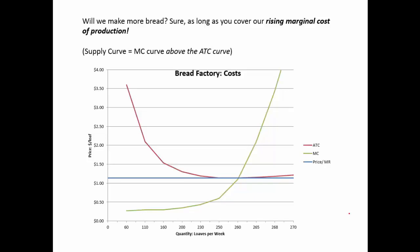The takeaway is I'm going to produce bread — and we'll get into all this later in the class — but I'm going to produce bread at the point where marginal cost equals marginal revenue. That's going to be my profit-maximizing level of output. And then to produce more bread, what's going to have to happen?